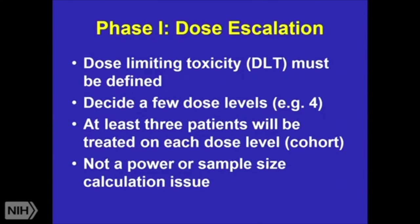I'm going to go through what's called sometimes the three-by-three, or Fibonacci sequence — though it's not a real Fibonacci sequence. These were the basic models used for several decades for phase one studies, and probably a large portion still use them today, though they've been modified in the last couple of decades. In phase one, you decide on a handful of dose levels and decide what toxicities are so bad you would stop — using something like the common toxicity criteria AE grading, such as grade three or grade four AEs. At least three patients will be treated on each dose level in each cohort — that's where the 'three' comes from.